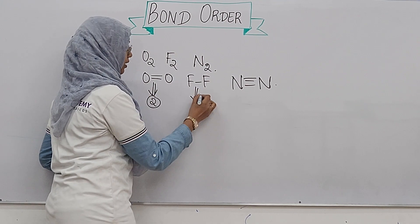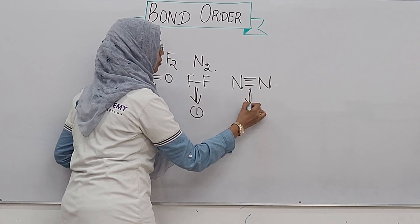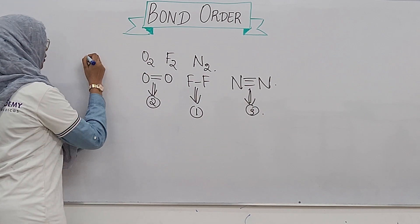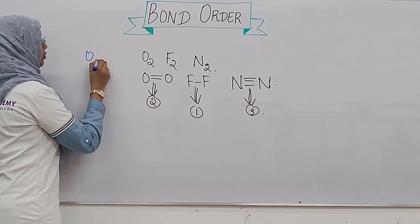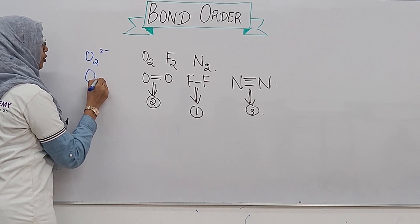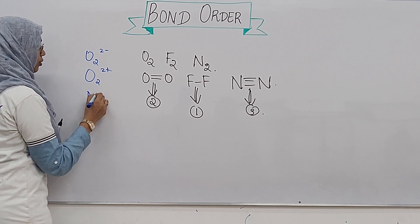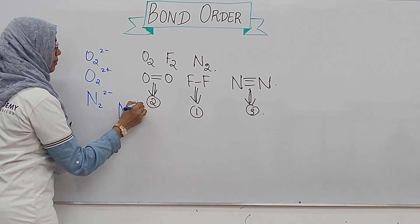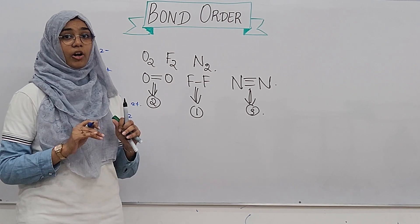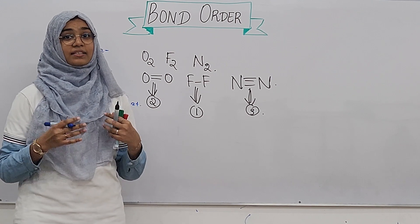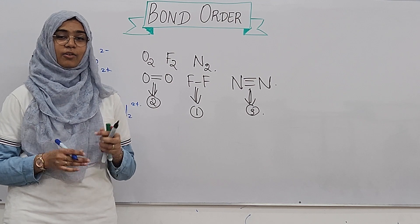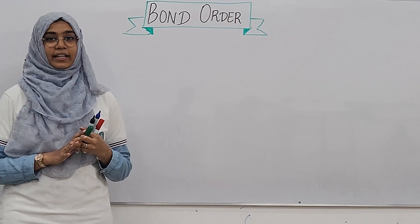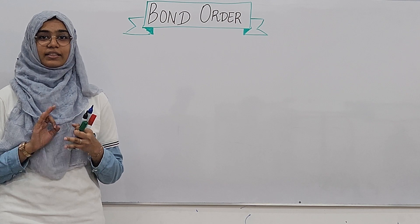F2 has a bond order of 1, and N2 has a bond order of 3. The maximum bond order for a molecule is 3. I will tell you an easy way to calculate it.